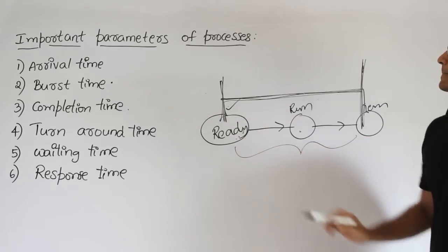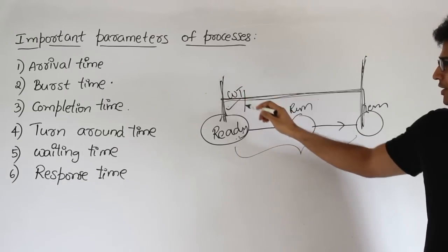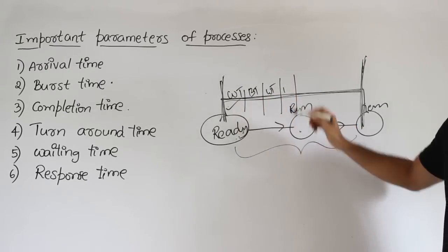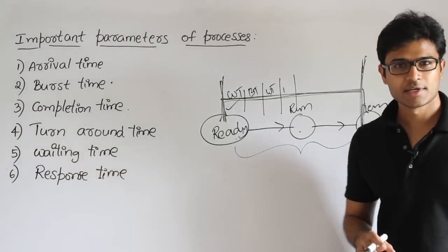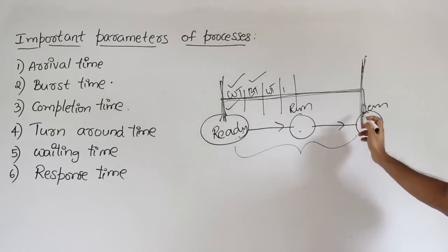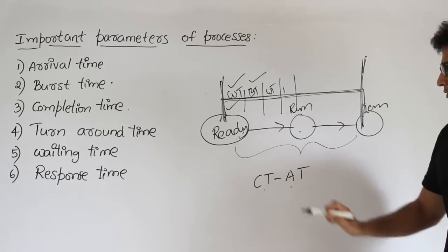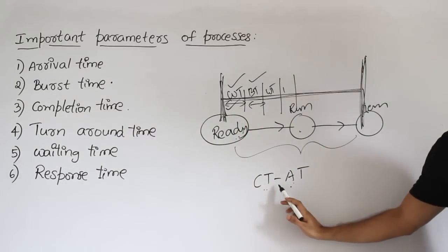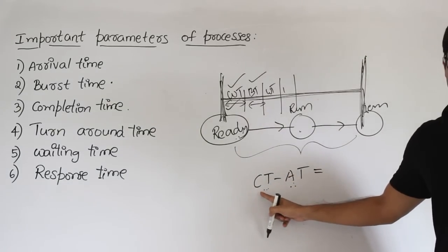From the start point to the finish point, what happened in between? One thing is it will wait for the processor — that is called waiting time — and then it will execute, which is the burst time, and then wait again, and execute again. Completion time and arrival time are points in time, whereas waiting time and burst time are durations in time. The difference between two points in time gives a duration — so completion time minus arrival time gives us a one-hour span, for example.